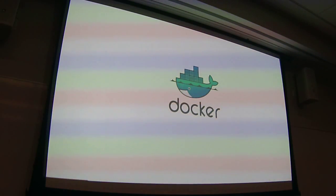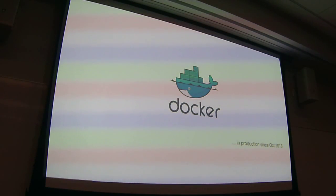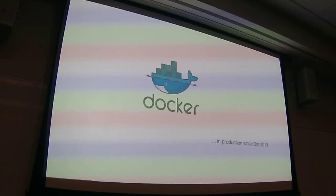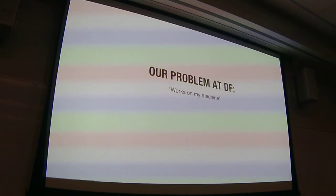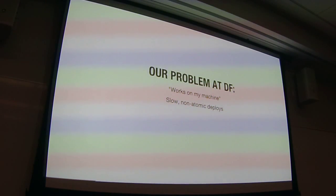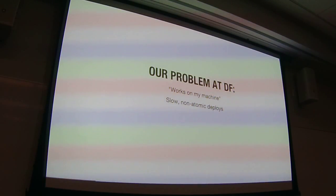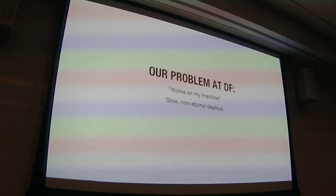I'm sure some of you are saying you're going to leave now because this person is crazy, but this was actually solving a very serious problem. A big part of it was 'it works on my machine.' We had a major problem with divergence between the local development environment and production. We had slow, non-atomic deploys. I'm ashamed to say that when I started at DramaFever, our deployment mechanism was effectively SSH in a for-loop with a gate poll. Don't do that — you can wrap it in Fabric, the Python tool, and it looks like you're doing DevOps, but it's still SSH in a for-loop.